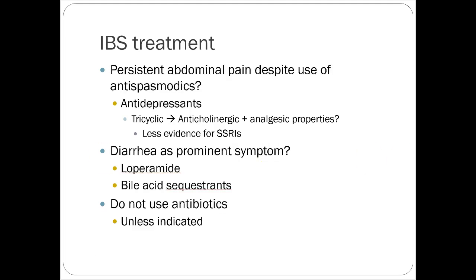For persistent pain with patients returning for repeated dicyclomine refills, longer-acting options like tricyclic antidepressants may be tried — they're anticholinergic and have analgesic properties used for neuropathic pain. If diarrhea is prominent, loperamide or bile acid sequestrants are options, though not commonly used. Antibiotics are generally not indicated for IBS unless a specific pathogen is found on stool culture.